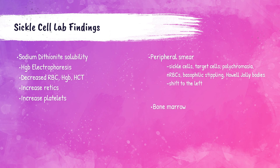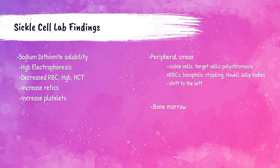In terms of laboratory findings for sickle cell disease: patients have a positive sodium dithionite solubility test. Electrophoresis will show hemoglobin S present. Patients will have decreased red blood cell count, hemoglobin, and hematocrit levels, as these abnormal red cells are prematurely lysed. An increased reticulocyte count from compensatory red cell production and an increase of platelets may also be seen. On the peripheral blood smear: sickle cells, target cells, basophilic stippling, and Howell-Jolly bodies can be present. Polychromasia, nucleated red blood cells, and a left shift (increase of immature neutrophil precursors) can also be seen as the bone marrow compensates for red blood cell loss.